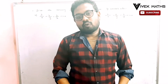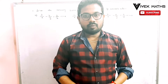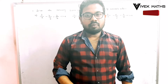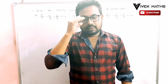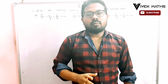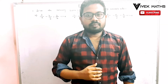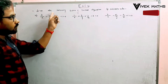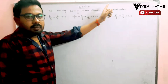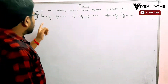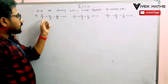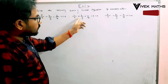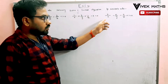Hi everyone. Today it is very important to know how to solve the following system of linear equations by Cramer's rule. We have 3/x minus 4/y minus 2/z equals 0, and 1/x plus 2/y plus 1/z minus 2 equals 0.